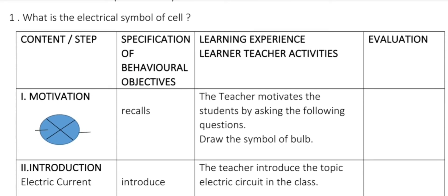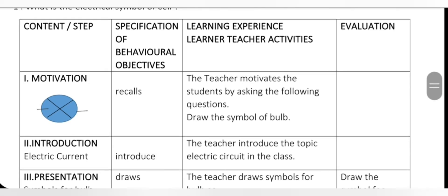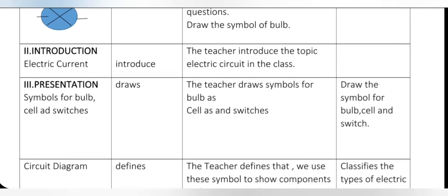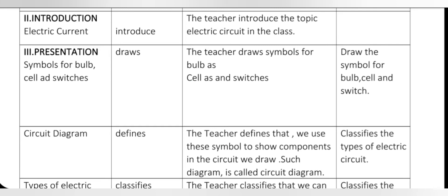The table contains: specification of behavioral objectives, learning experience or learner-teacher activities, evaluation, content or step. In the content there are four steps: motivation, introduction, presentation, and recapitulation. First, motivation — when the lesson starts, we will test student motivation. We start the class and you can see the bulb getting involved; they are motivated.